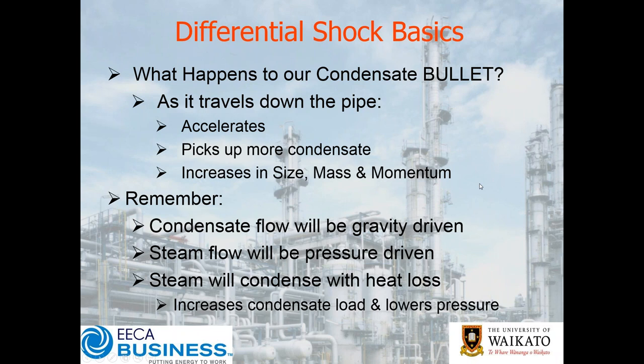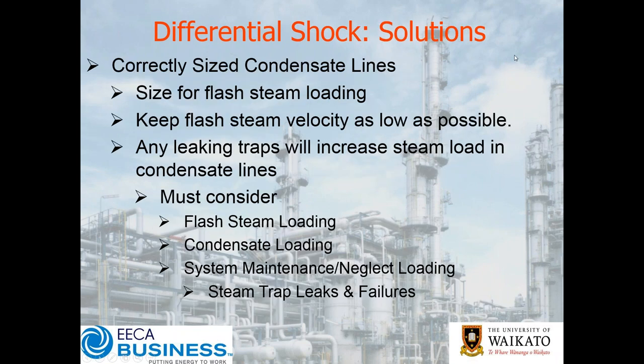So what do we need to remember? We want condensate to flow with gravity; steam is going to be pressure driven and will condense with heat loss. What's our solutions? One: correctly size our condensate line so our flash steam velocity in the line is low. We want our condensate loading low with a good drain so it's not building up in the line — a very small trickle of condensate in our line. If we have any leaking traps, that's going to cause a problem because we'll have extra steam — not just flash steam but live steam — coming into our condensate line, massively increasing steam velocity in the condensate line, which increases our wave height level, which increases the number of condensate bullets.